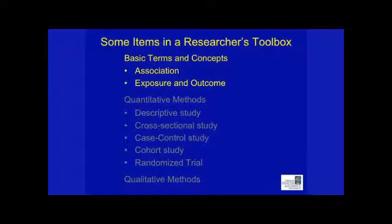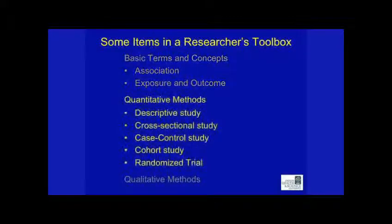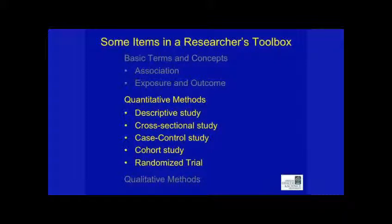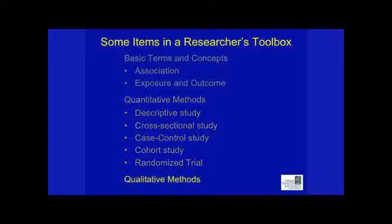We're going to spend quite a bit of time with some basic terms and concepts — these are the foundation of what the rest of this will be. We're going to talk about association, exposure, and outcome. Then we're going to talk about quantitative study methods — coming from quantity — which rely on measuring with numbers and mathematical methods. We'll look at five different types, spending most of our time on descriptive and cross-sectional studies. Finally, we'll talk briefly about qualitative methods, which don't use numbers so much and are mostly interested in information gathered from talking with or observing people.